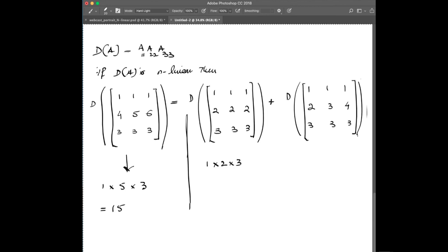On the right side, when D is applied to the first matrix, it is 3 times 2 times 1, which is 6. Add to which 3 times 3 times 1 equals 9. And the sum again is 15. So 15 on both sides is the same. Therefore, the function D of A is a 3-linear function.